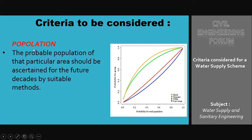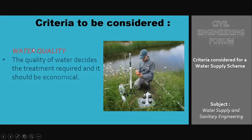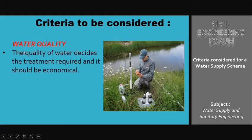The next criteria is water quality. The quality of water decides the treatment required, and it should be economical. The quality of available water decides the line of treatment — the impurities present in the water should be as low as possible and should be such that they can be removed easily and economically. If the quality of available water is not good, it requires costly treatment.